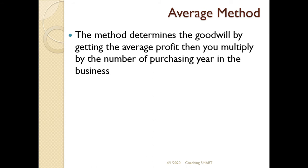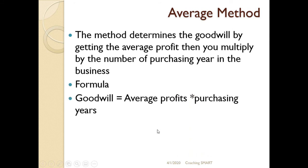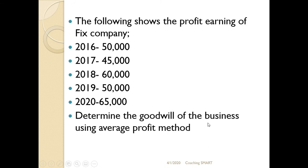There are two methods: one is the average profit method and two is the weighted average profit method. The formula for goodwill is: goodwill equals average profit times purchasing years. You'll be given how many years the purchasing years will be — whether two, three, or five years. We can look at this in a practical manner.